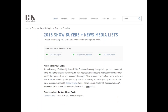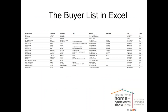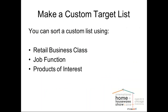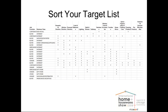Once you have logged in, you will come to a page where you will see the show buyers and press or news media lists. From here you can click on one of the three lists and download it in Excel format. Once you download and open your Excel list, you can make a custom target list by sorting. A few of the sorting columns are retail business class, job function, and products of interest — these are just a few, as there are many more columns you are able to sort by.